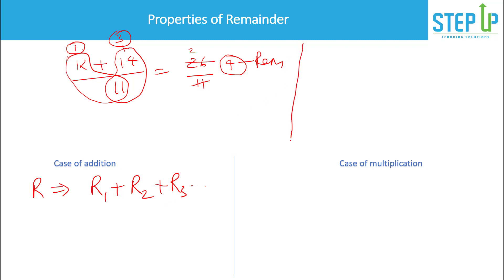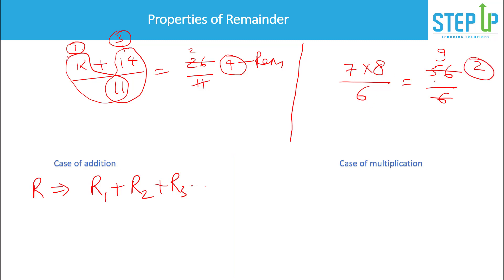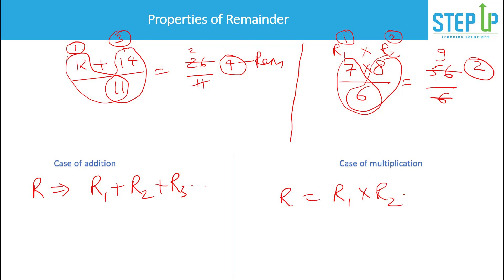Now the multiplication property: take 7 × 8 divided by 6. Normally 7 × 8 = 56, and 56 ÷ 6 gives remainder 2. But instead you can take remainders separately: 7 ÷ 6 gives remainder 1, and 8 ÷ 6 gives remainder 2, then 1 × 2 = 2. So in case of multiplication, your final remainder is r1 × r2.